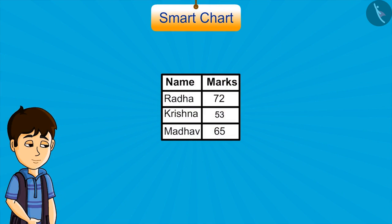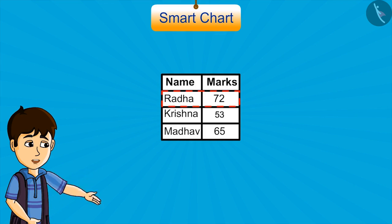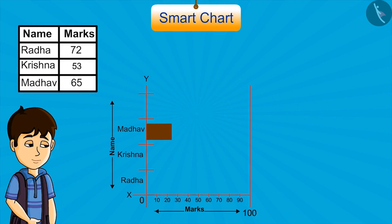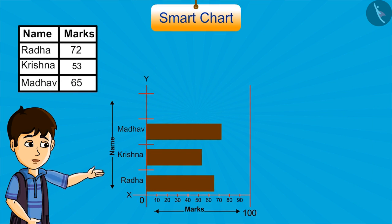Here are the marks scored by 3 students in maths. Radha got 72, Krishna got 53, and Madhav got 65. Let's represent this in strips. If we place the strips like this, is it right?